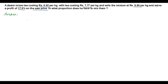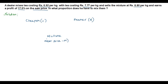Consider two qualities of the same product — one is low quality and the other one is high quality. Low quality can be said as cheaper and high quality can be said as dearer. We are going to mix both cheaper and dearer to get a mixture. Let c be the cost price of cheaper and d be the cost price of dearer. Mean price m is the cost price of the mixture.